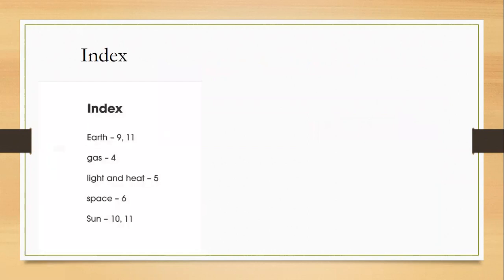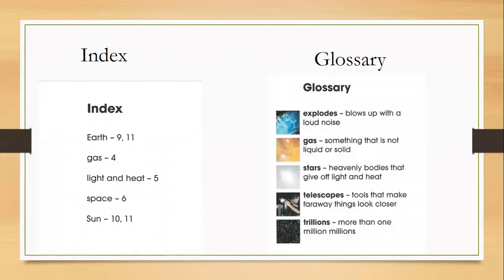Then we have an index, which is usually in the back of the book. If we're looking for something specific, it will tell us what page it's on. This example was from a book about space — about gas, light, heat, and space. If I wanted to learn about the sun, I can see in the index that I need to go to page 10 or 11. The index helps you find very specific things inside your book.